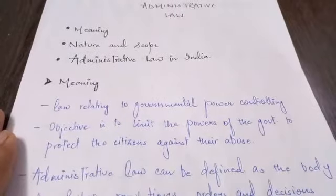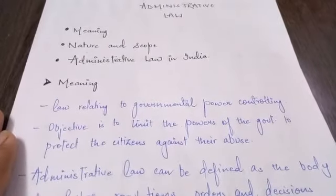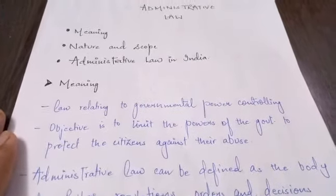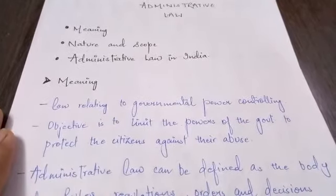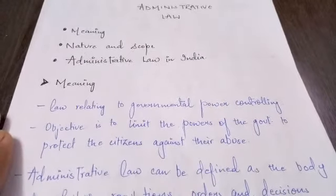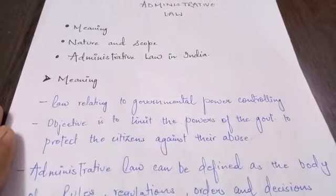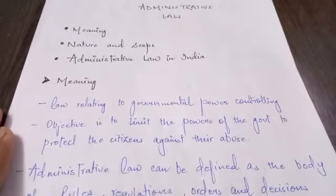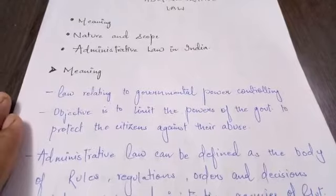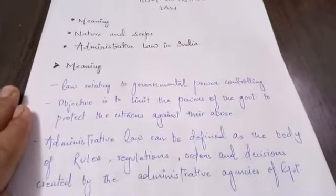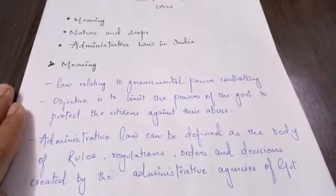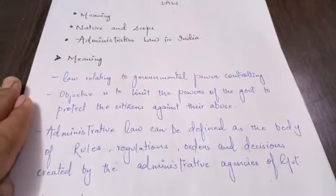Its objective is to limit the powers of the government to protect the citizens against their abuse. As I have told you before, those who receive powers from the government will absolutely use those powers and may abuse them. This is why administrative law has been introduced as a check. Administrative law can be defined as the body of rules, regulations, orders, decisions, and various other miscellaneous functions which have been created by the administrative agencies of the government.